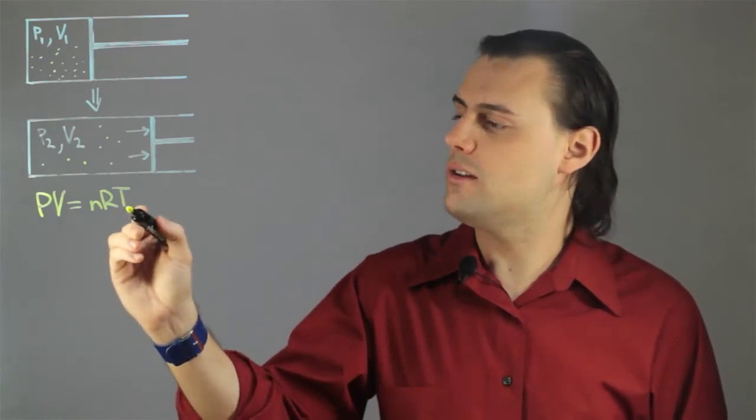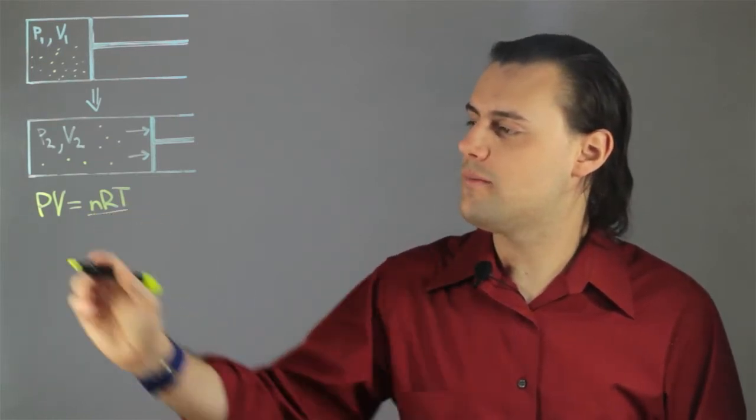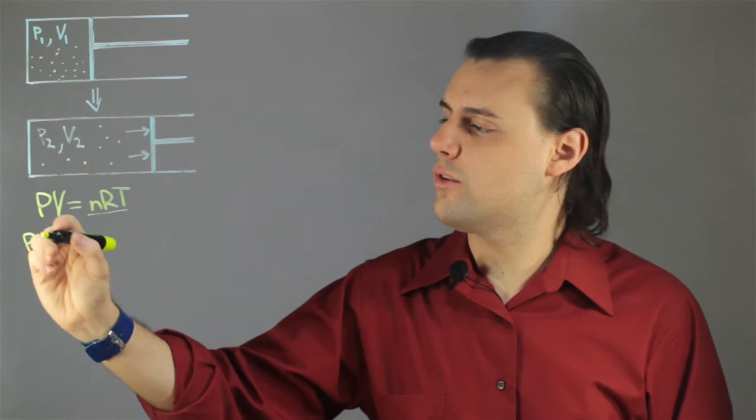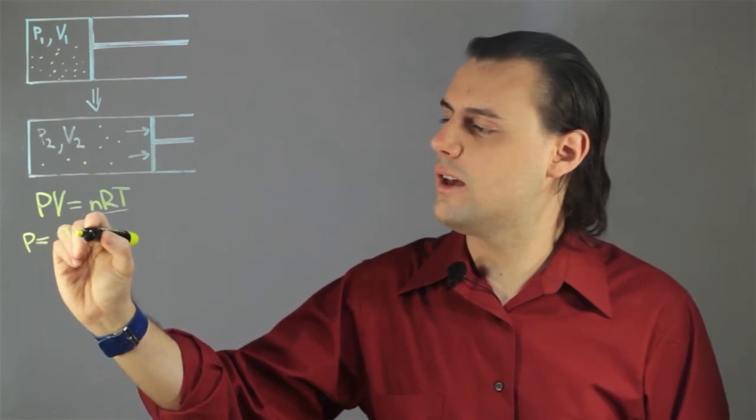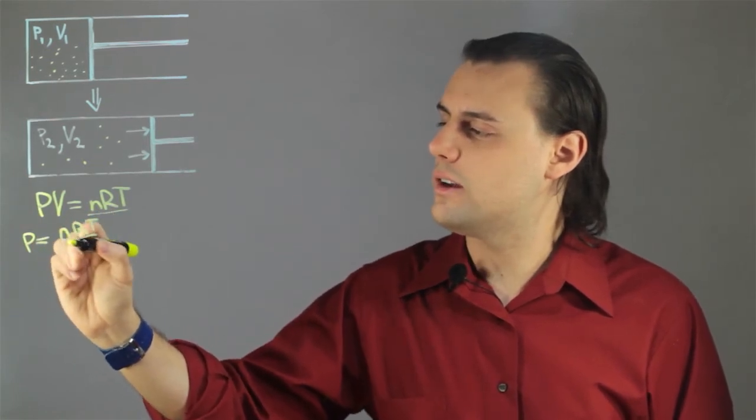times the gas constant R times the temperature of the system. So if I assume that these don't change, then I can write down a formula for the pressure as nRT divided by the volume.